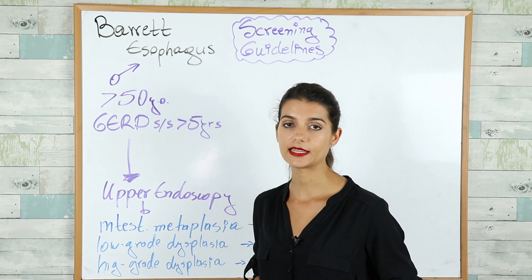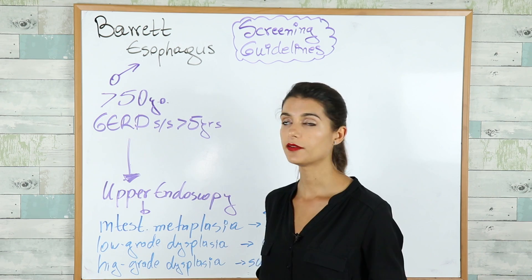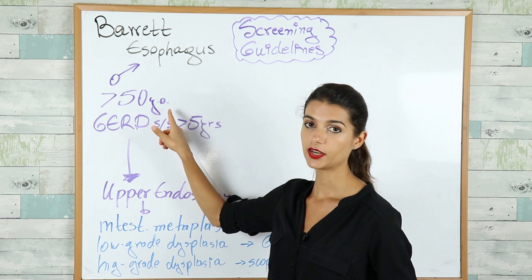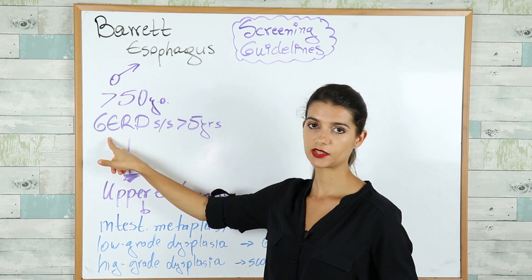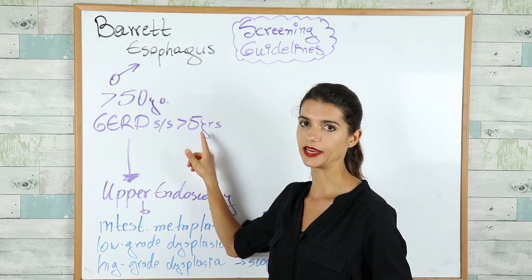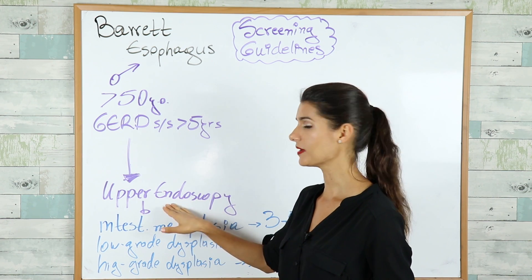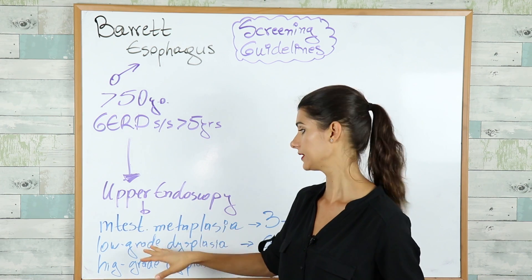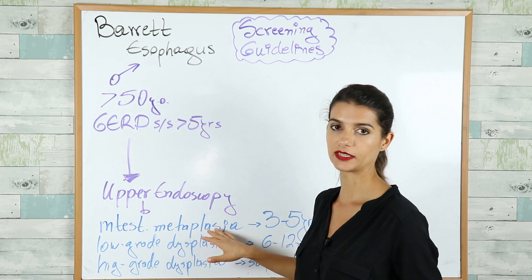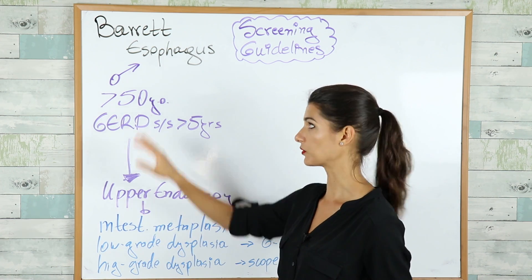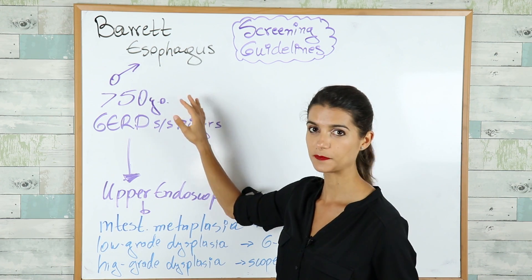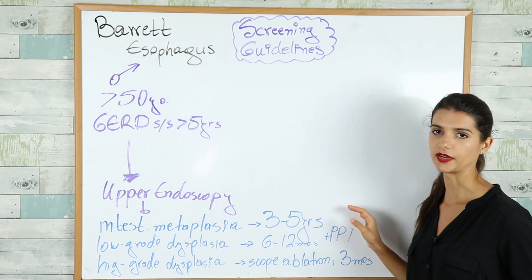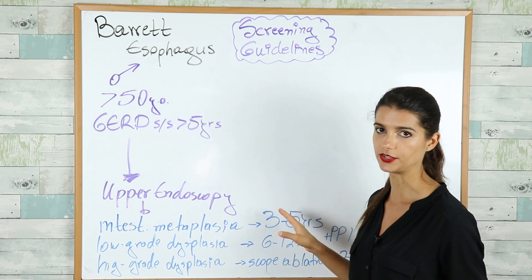We screen for Barrett's esophagus in every male patient above 50 years of age who has had GERD symptoms for more than 5 years. We perform upper endoscopy in these patients, and if we find intestinal metaplasia — which is diagnostic for Barrett's esophagus — we have to repeat the upper endoscopy in 3 to 5 years to see for any changes.